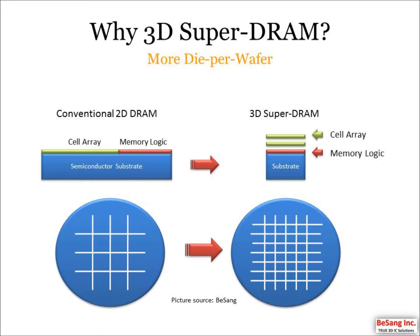Let me explain what 3D Super DRAM is and why we need it. Planar DRAM has the memory cell array on one side and memory logic circuitry on the other side. 3D Super DRAM stacks the cell array on top of memory logic. Therefore, die size becomes small and we can produce more dies per wafer, meaning 3D Super DRAM is much cheaper than Planar DRAM.